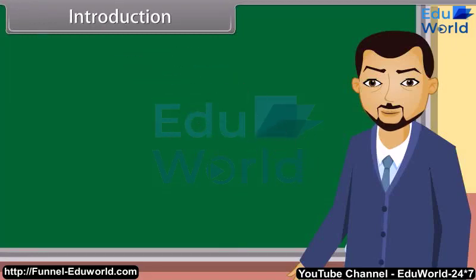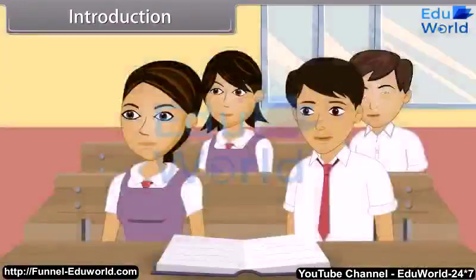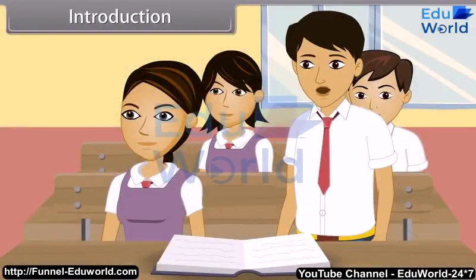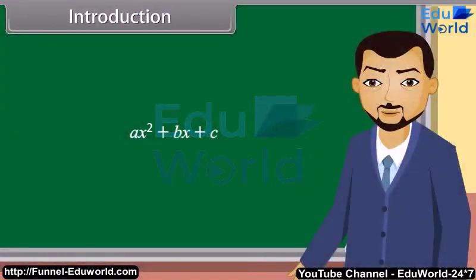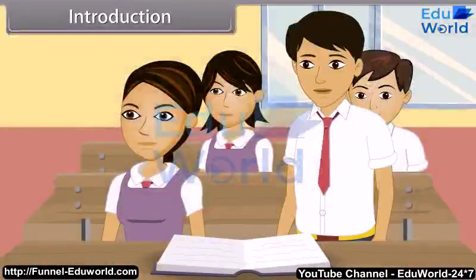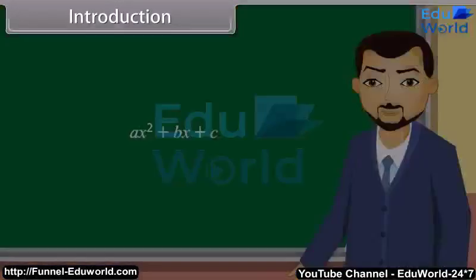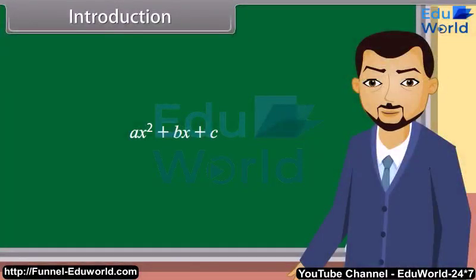Introduction. Students, do you know what polynomials are? A polynomial is an expression of more than two algebraic terms. Can you tell which type of polynomial is this? Is it a quadratic polynomial, sir? Correct. This is a quadratic polynomial. When we equate this polynomial to zero, we get a quadratic equation. Today we will learn about quadratic equations.